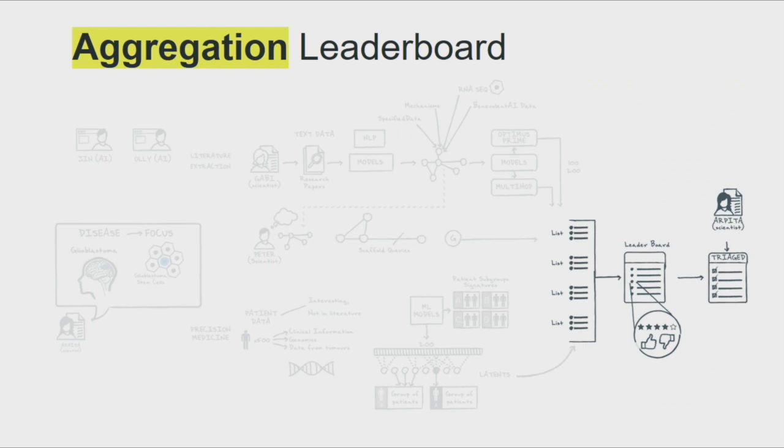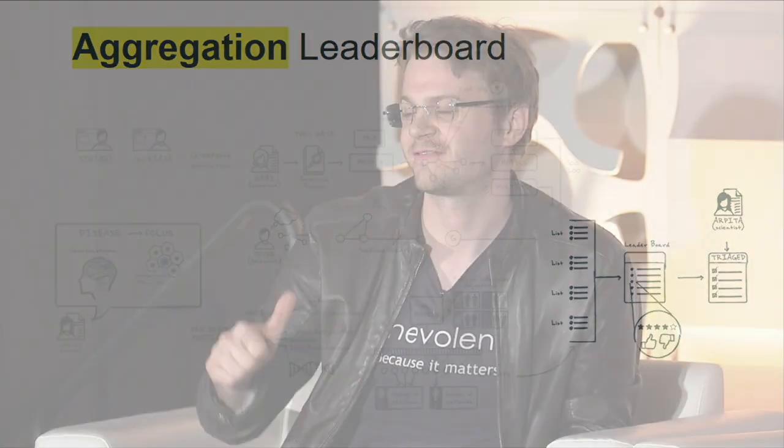Our scientists will sit down and they can go through all of these lists and they can sort of swipe left when they look at a gene that they don't really like the look of. He's not even joking. They literally can swipe left. Do we have any Tinder users in the house?